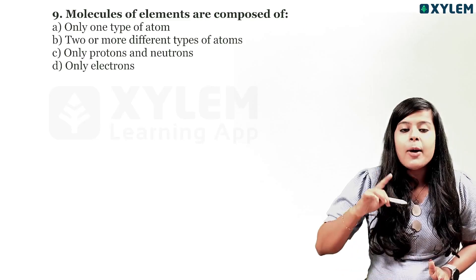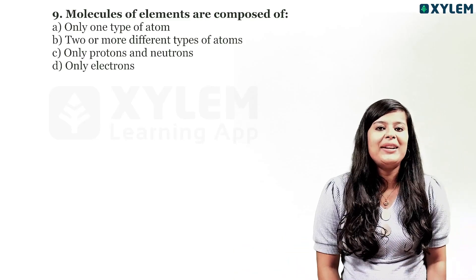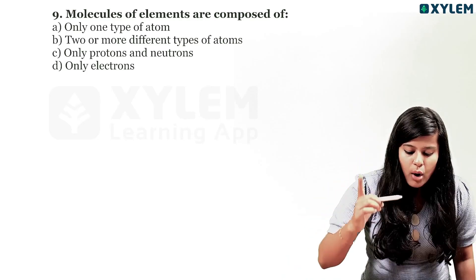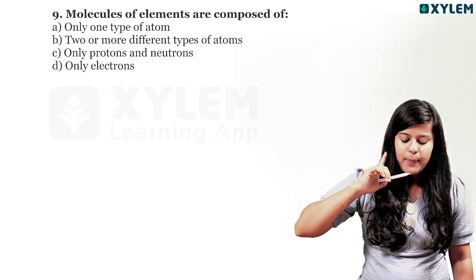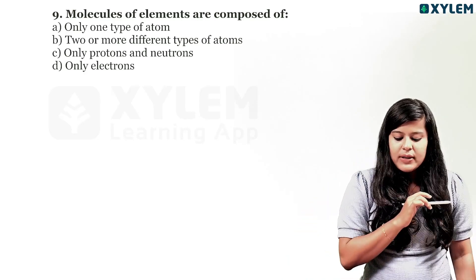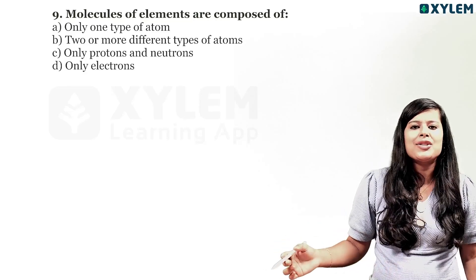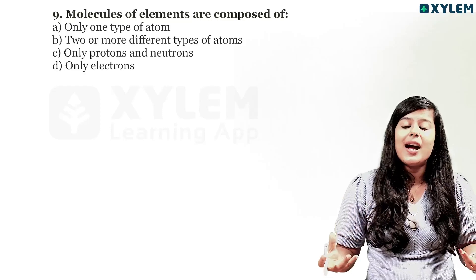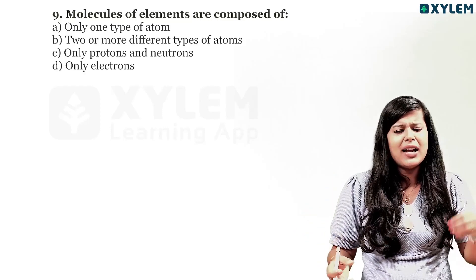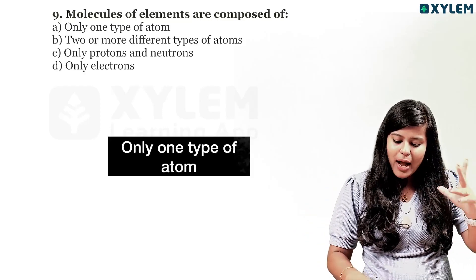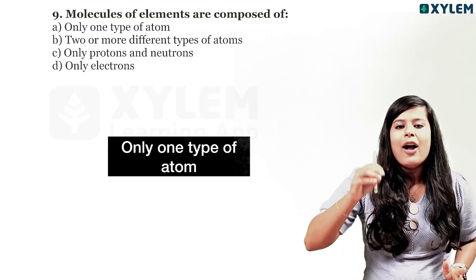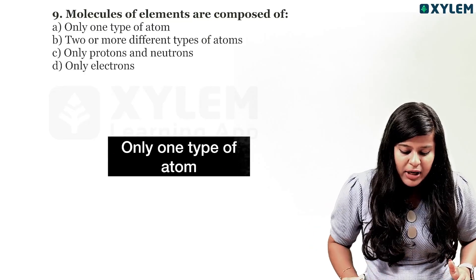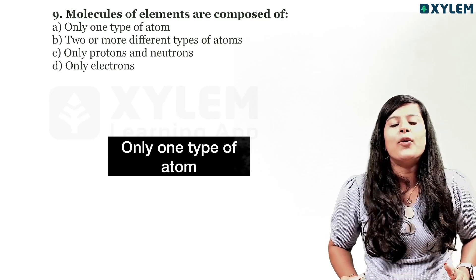Next question. Molecules of an element are composed of: only one type of atom; two or more different types of atoms; only protons and neutrons; or only electrons. The answer is: only one type of atom is present in the molecules of an element. That is simple and powerful.